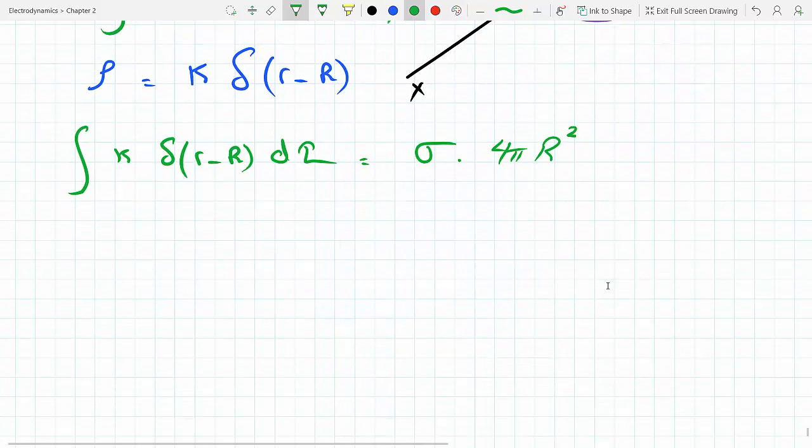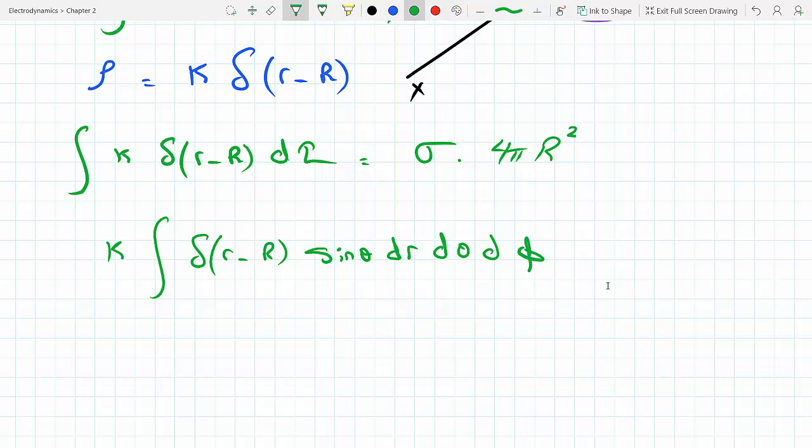Okay, now we know what dτ is. This is going to be K integral delta R minus R. What's dτ? dτ is in spherical coordinates, it's sine theta, dr dθ dφ, and this has to equal sigma 4πR².